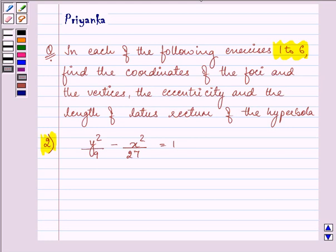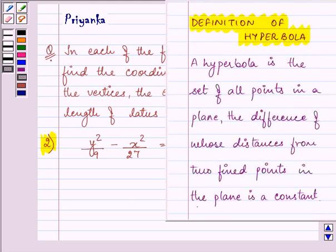Let us first understand the definition of a hyperbola. A hyperbola is a set of all points in a plane, the difference of whose distances from two fixed points, which we call as foci, in the plane is a constant.